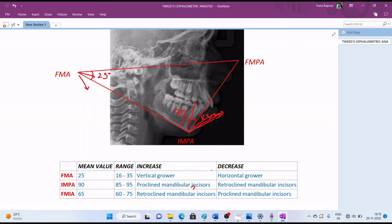Now for the FMIA angle, the mean value is 65 degrees with a range from 60 to 75, and it works opposite to that of IMPA. Increase in this value will indicate retroclined incisor, while a decrease will indicate more proclined ones. You can memorize this simple table for the values and implications, and that's all for Tweed's cephalometric analysis.